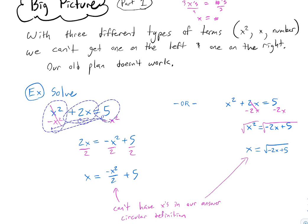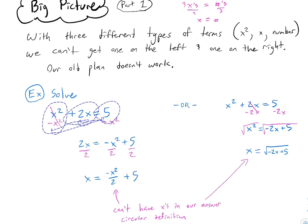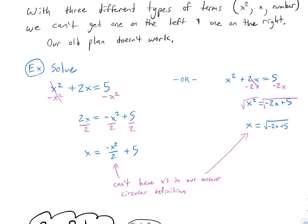There's no way to put one type on the left, one type on the right, and stop — you'll always have two different things on one side. If you use your old plan, your answer gets written in terms of x squareds and numbers. That's not helpful. That's like saying the car is car-like to define it. You can't define x in terms of x; you want to find out what number it's equal to.